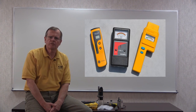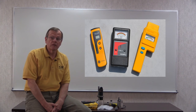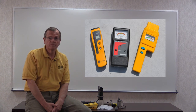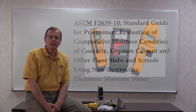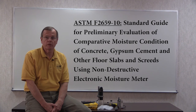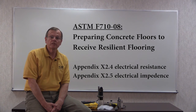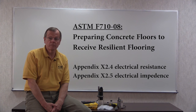For the evaluation of this floor problem, moisture meters were used. The meters are based on electrical impedance, electrical resistance or conductivity, or radio frequency. ASTM standards address the electrical impedance meters — ASTM F2659 — and both the electrical impedance and electrical resistance meters — ASTM F710.